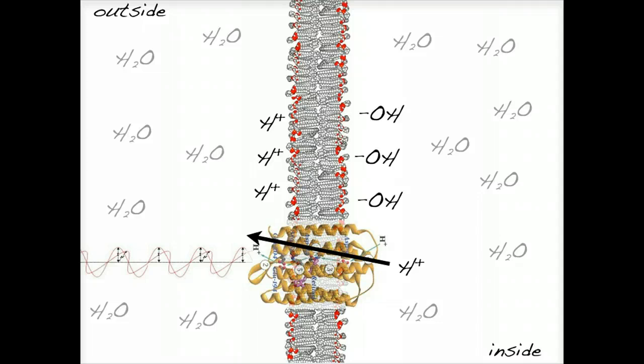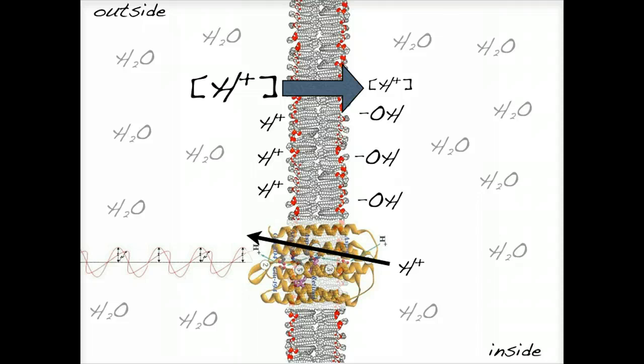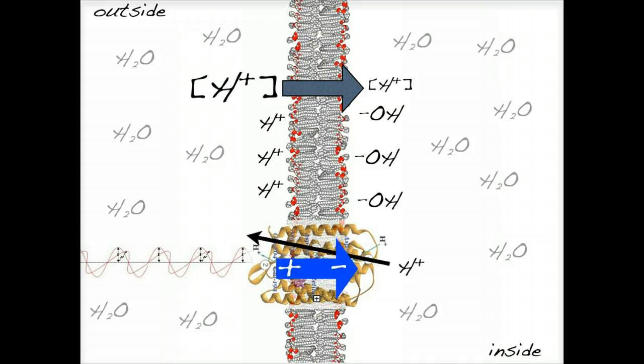This leads to the formation of a hydrogen ion gradient across the membrane. At the same time that this hydrogen ion gradient is forming, there's also an electrical field generated by the charge separation between the hydrogen ions and the hydroxyl ions.